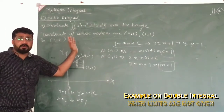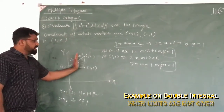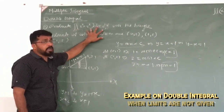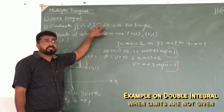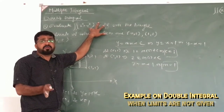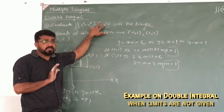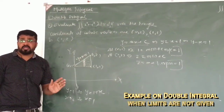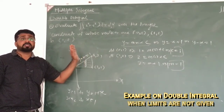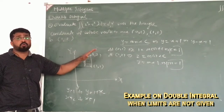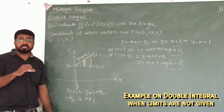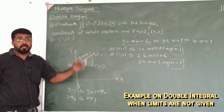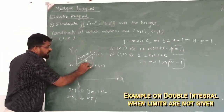Now we have to decide whether to take a vertical strip or a horizontal strip. If you look at the integrand, it is x squared plus y squared, which is symmetric in nature, so you can integrate with respect to either. Let's take a vertical strip here, which means we will do the first integration with respect to y.